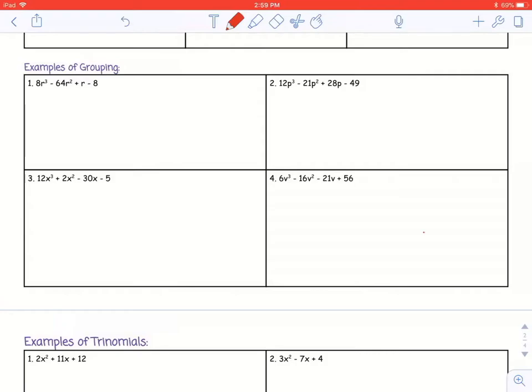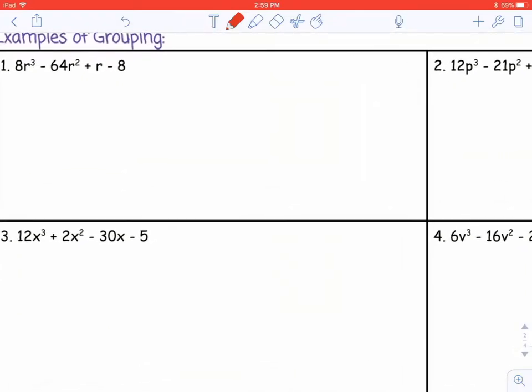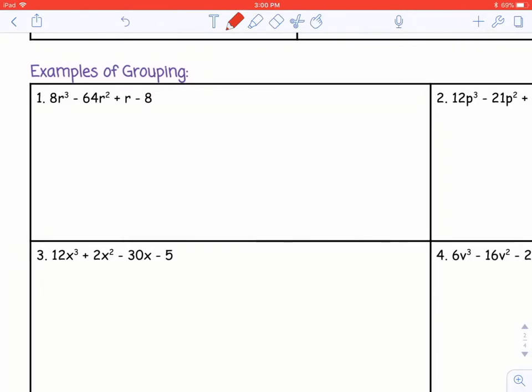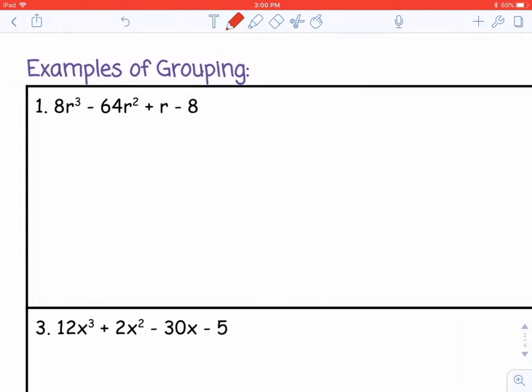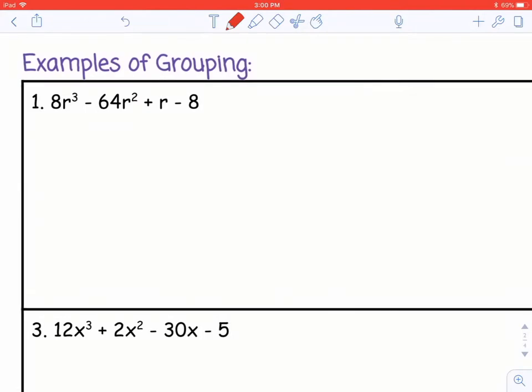So grouping is needed when we have four or more terms. So let's look at number one. We have 8r cubed minus 64r squared plus r minus 8.